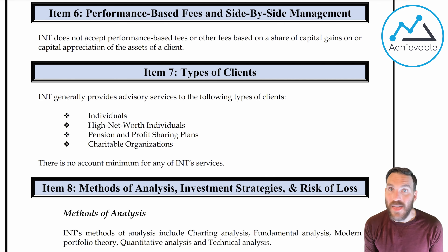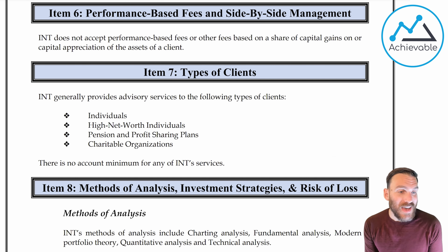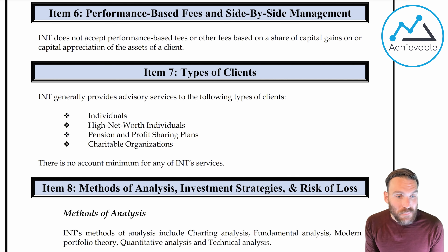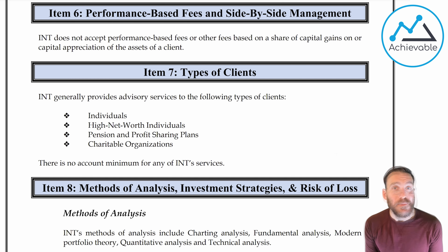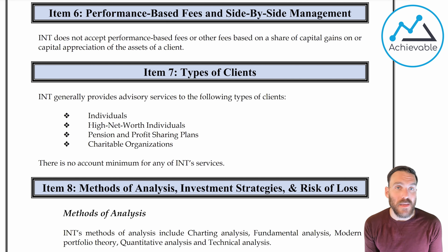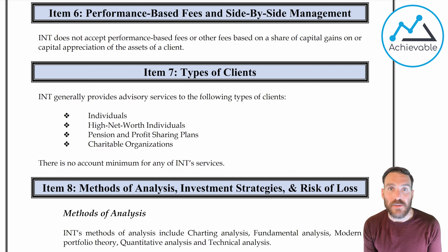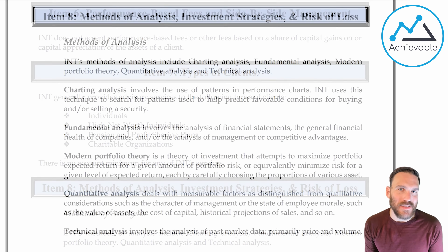Item 7 is types of clients, and it looks like they do a little bit of everything: individuals, high-net-worth individuals, pension and profit-sharing plans, and charitable organizations. They also have no account minimum, so you could show up with $1,000 or be a pension plan with $100 million to invest, and this advisor will still help you. Item 8 covers methods of analysis — basically what this investment advisor does to find the right investments for you.